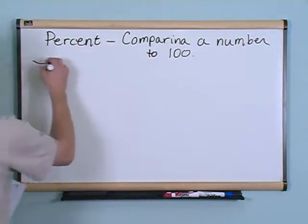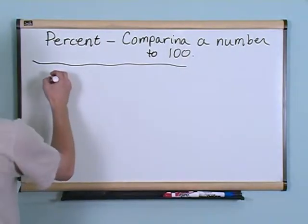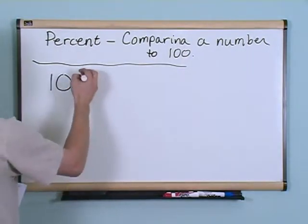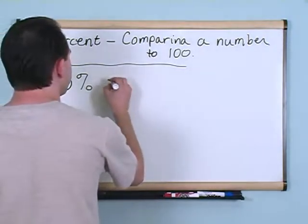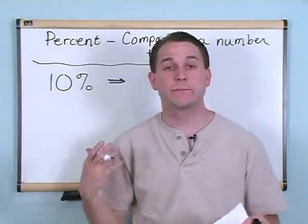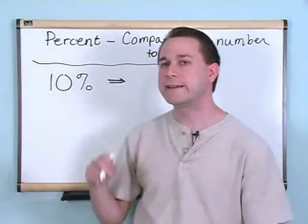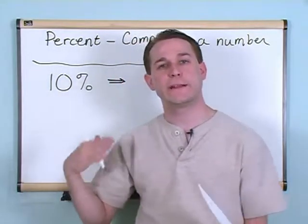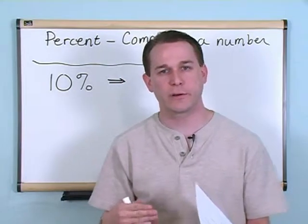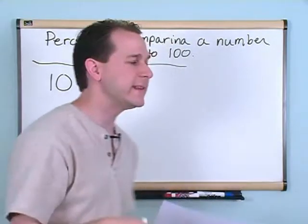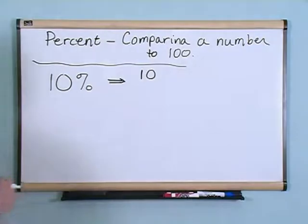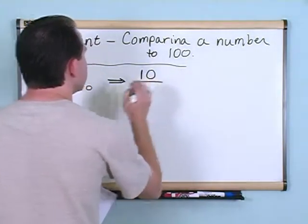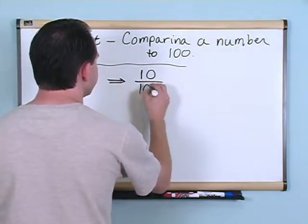To take an example of that, somebody might say 10%. They would write 10 and then put this little symbol over here and that means percent, 10%. Now the question is, what does it mean? What I told you is that percent is comparing a number to 100. So when you write down 10%, all you're doing is saying 10 compared with 100. We're going to write that down in a way that we can see what we're talking about. I'm going to write the 10 down here.